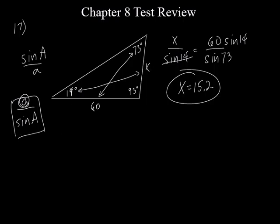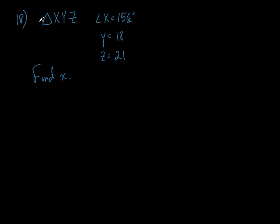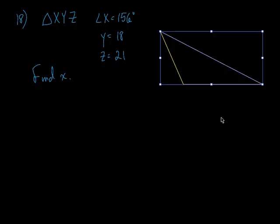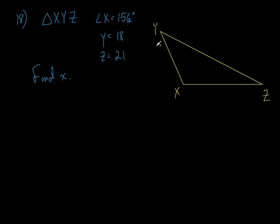Let's move on to number 18. The problem doesn't draw a triangle, but it's a good idea to draw it out. One angle is 156 degrees, which is obtuse, so we have an obtuse triangle. We'll call that angle X, the other angles Y and Z. Angle X is 156 degrees.